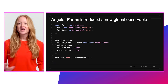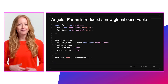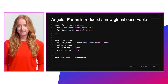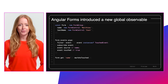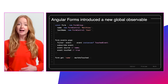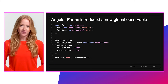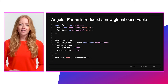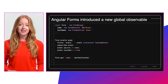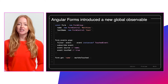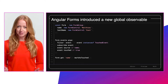And we've closed our number one most upvoted feature request on GitHub. Angular Forms introduced a new global observable you can subscribe to in order to track changes around any abstract control and its children. You can now track all kinds of events like touched, dirty, etc., in addition to value and status, all through a single observable.